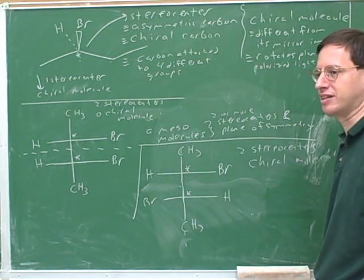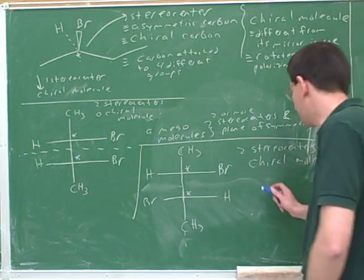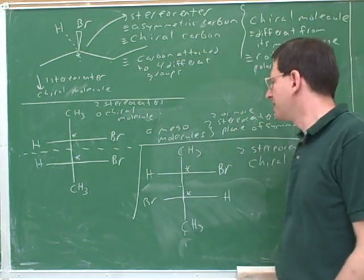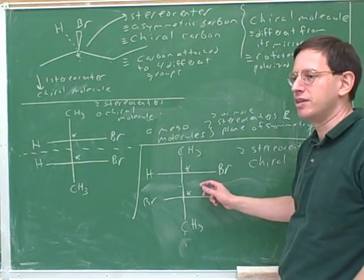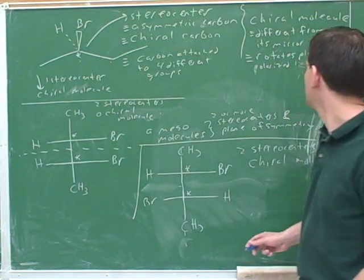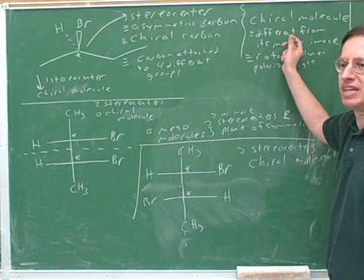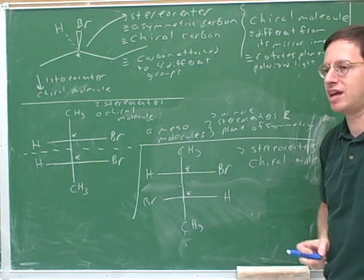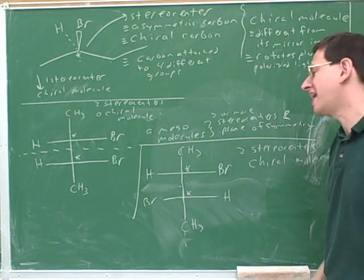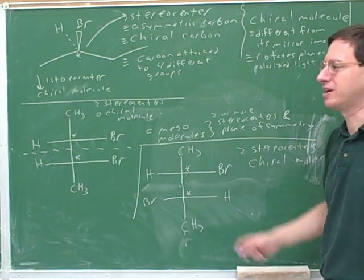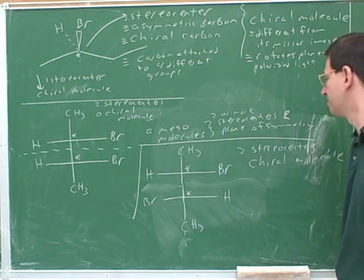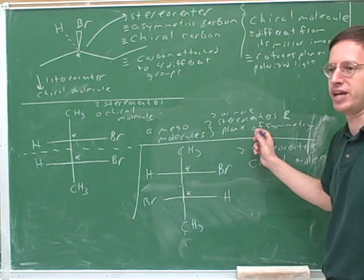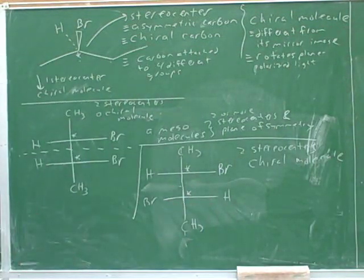Would this rotate plane polarized light? Yes, this would rotate plane polarized light. There would be another way to confirm this is chiral — you could write down its mirror image and then see that there's no way to rotate that mirror image to superimpose it on the original. But that's not the method I'd encourage you to use because it's hard to try all the different rotations. It's much faster to look for stereocenters and then check for a plane of symmetry.